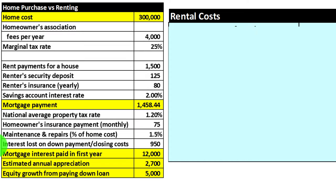We also have the interest lost on down payment or closing costs, and the mortgage interest paid in the first year. We could use first-year mortgage interest, or mortgage interest on average, since it will change from year to year. We'll talk more about interest at the end of this problem. Additional inputs include estimated annual depreciation, appreciation, and equity growth from paying down the loan.